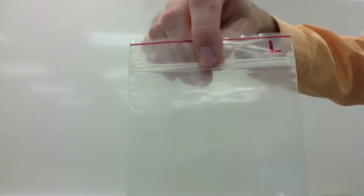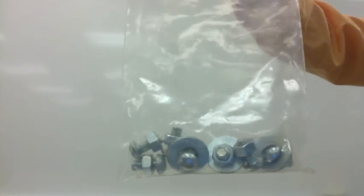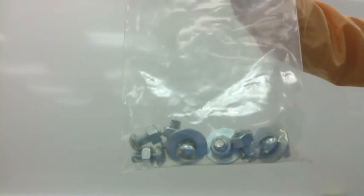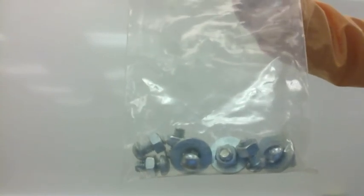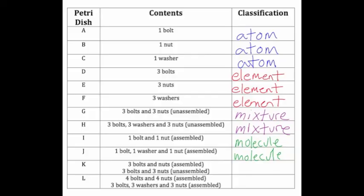Finally, in bag L, there are four bolts and four nuts that are assembled — they are hooked together. And we have three bolts, three washers, and three nuts that are also assembled and hooked together. In L, everything is hooked together — they're all molecules or compounds. So we have a mixture of compounds, or a mixture of molecules.